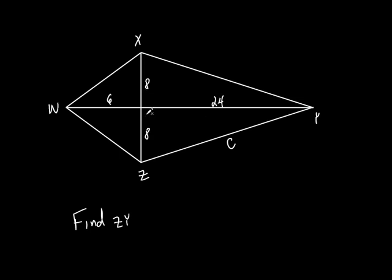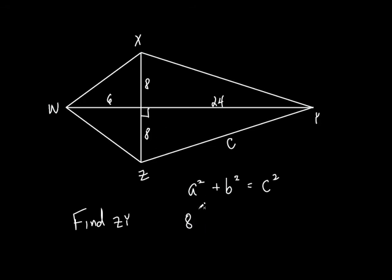What else do we know about the diagonals? They form a right angle. So I've got a right triangle with two known sides. We mentioned this yesterday. How can you find that third side? We use the Pythagorean theorem — A squared plus B squared equals C squared, where A and B are the two legs of the right triangle.